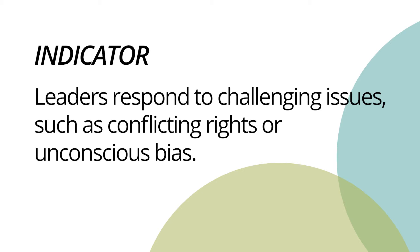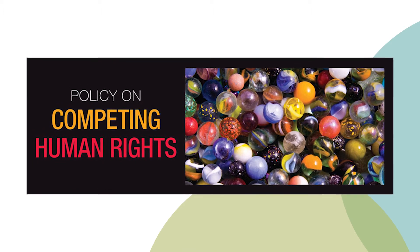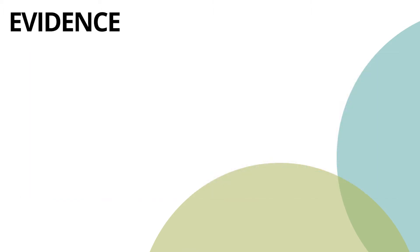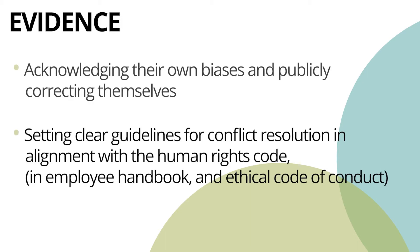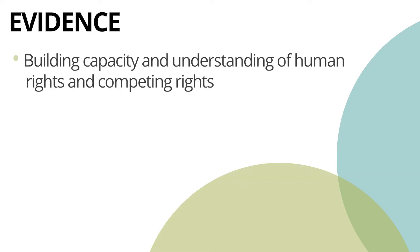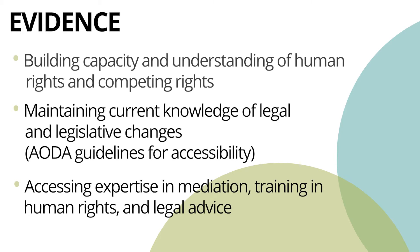Indicator: Leaders respond to challenging issues such as conflicting rights or unconscious bias. Demonstrating how to resolve equity issues in positive and productive ways helps all members of the organization to see equity and inclusion as a strength. Evidence includes: acknowledging their own biases and publicly correcting themselves; setting clear guidelines for conflict resolution in alignment with the Human Rights Code, an Employee Handbook, and Ethical Code of Conduct; building capacity and understanding of human rights and competing rights; maintaining current knowledge of legal and legislative changes; AODA guidelines for accessibility; and accessing expertise in mediation, training in human rights, and legal advice.